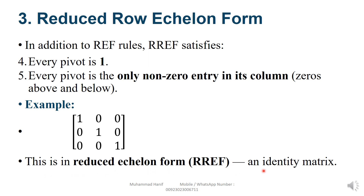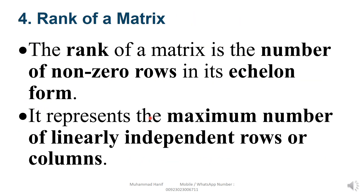This is like an identity matrix, meaning all the diagonal elements are 1 and off-diagonal are 0. Rank of a matrix: the rank of a matrix is the number of non-zero rows in its echelon form. It represents the maximum number of linearly independent rows or columns.